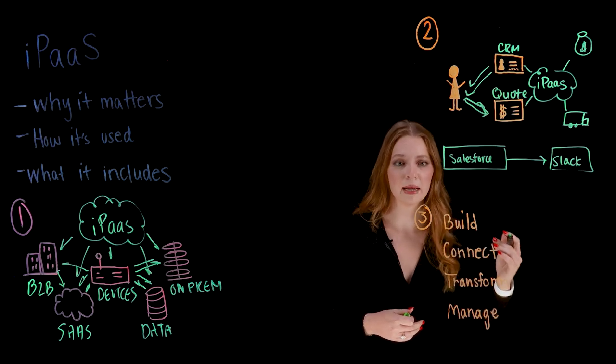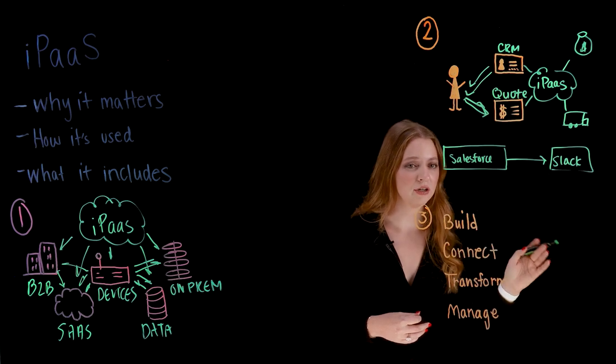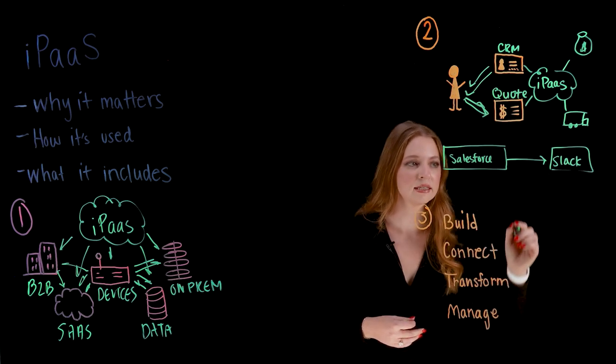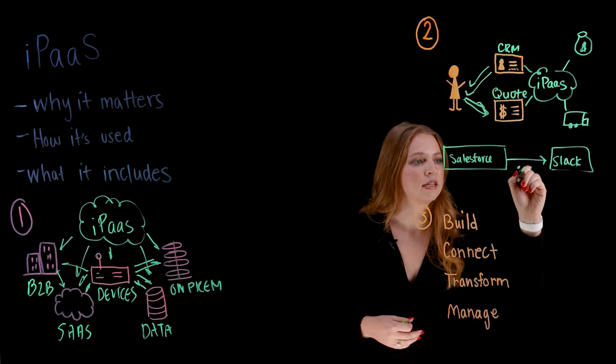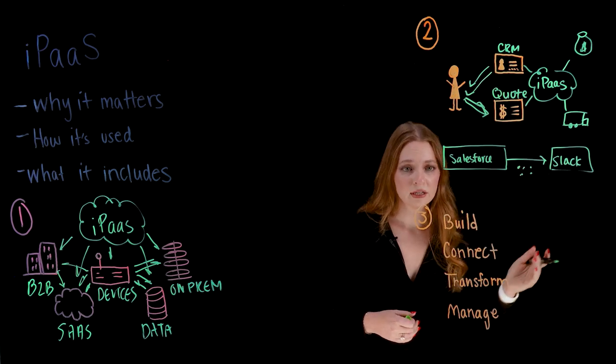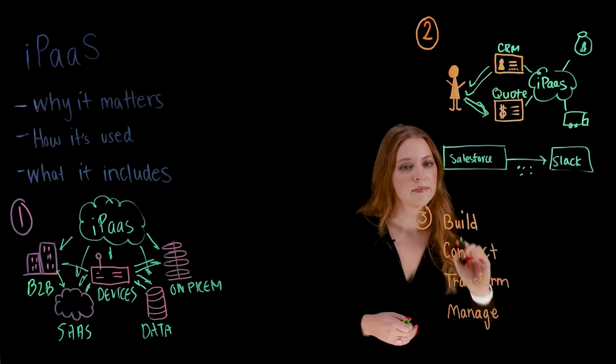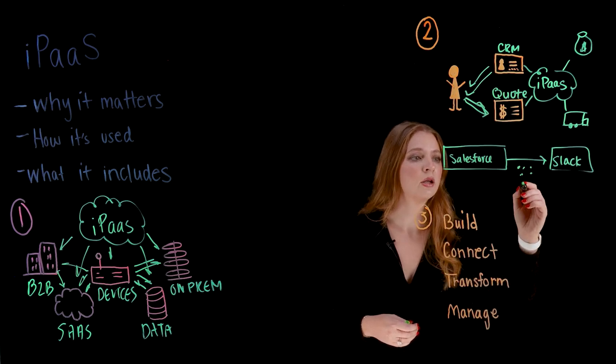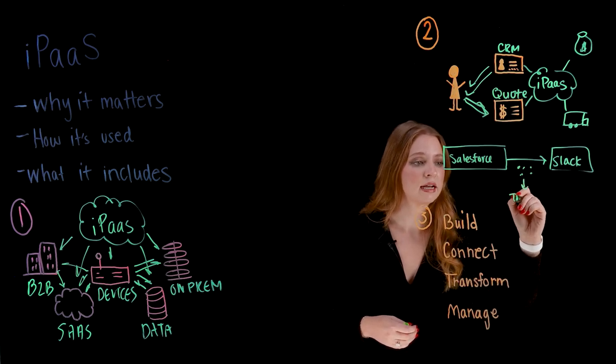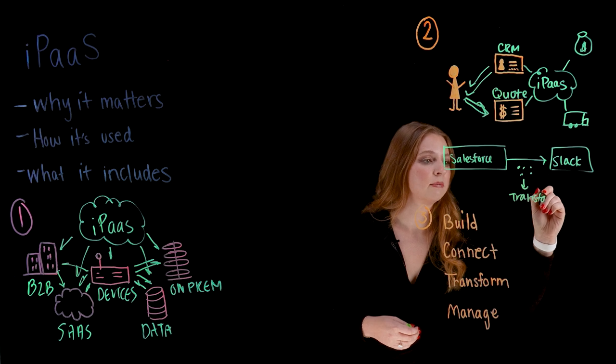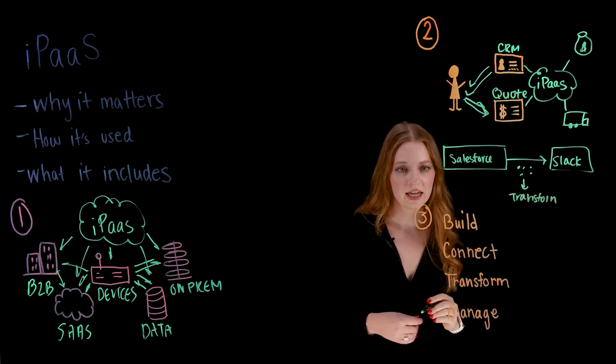But an added piece of this might be she only wants to notify her team when it's qualified leads. So she needs to make sure that the data that's being received within here is only alerting when it's a qualified lead. That's where the transform piece comes in, where she's able to transform the data that's flowing between these systems so that whenever she gets a notification to her team, it's only of the most qualified caliber of potential customers.